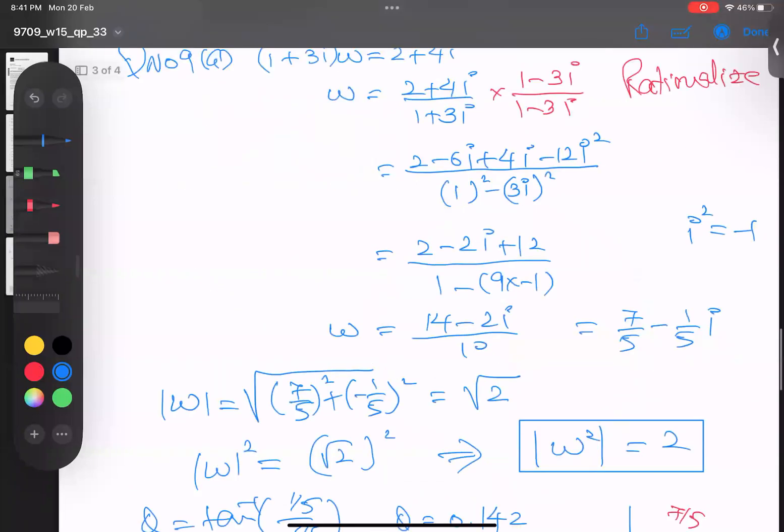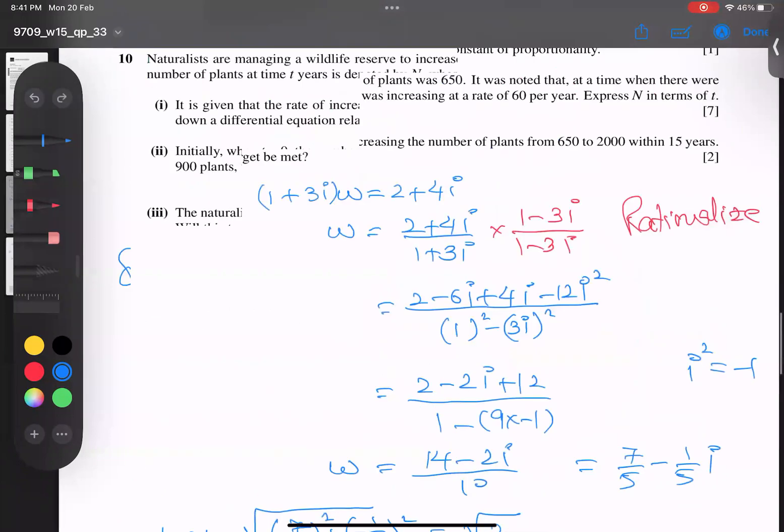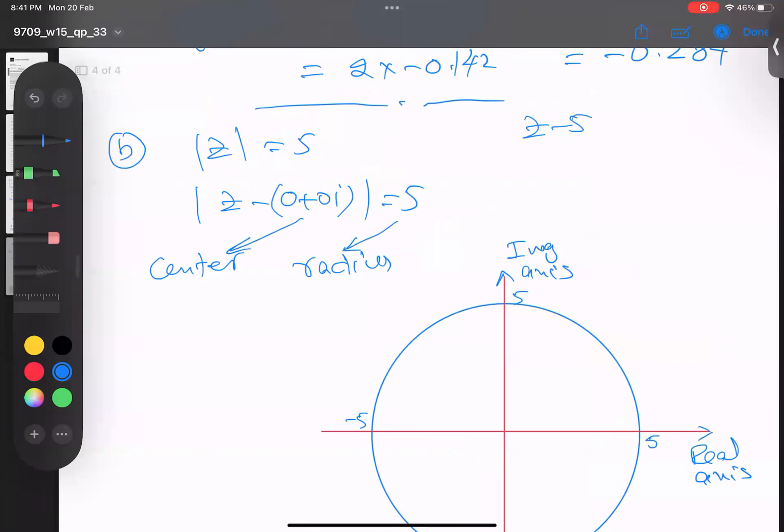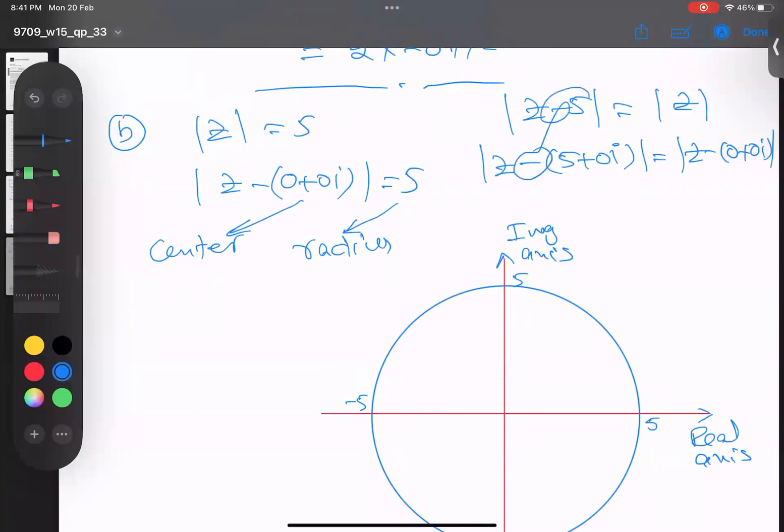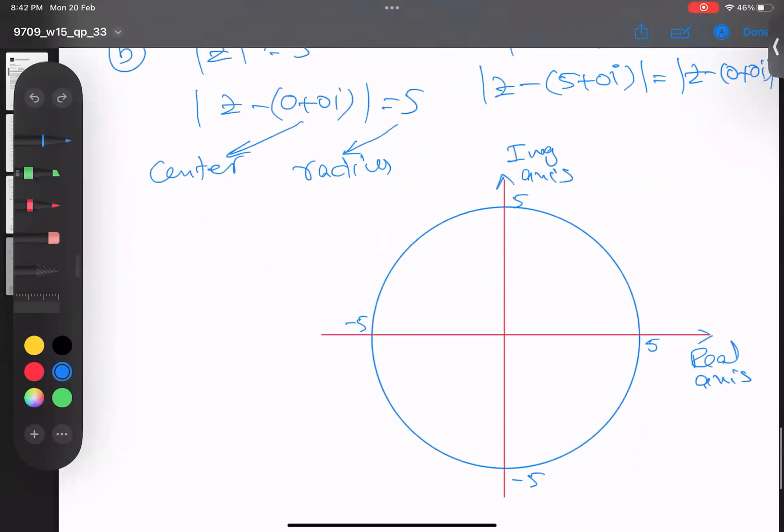Second locus: |z - 5| = |z|. This is a perpendicular bisector. You can ask how I know. Whenever z is involved on both sides with modulus, it's a perpendicular bisector. I took the negative from here. 5 converts to 5 + 0i. Zero is here, five is here, so I'll make a perpendicular bisector.